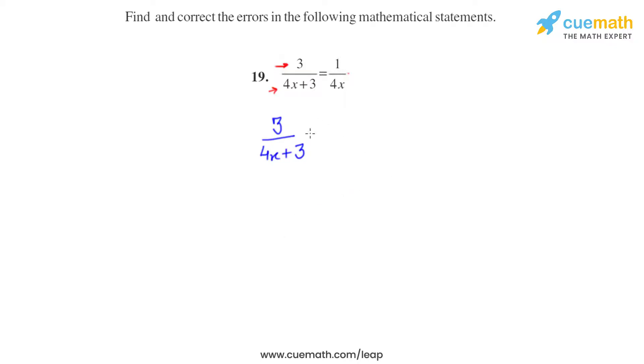So it means we cannot simplify it anymore. It stays as it is. 3 by 4x plus 3 is the final answer and it cannot be simplified anymore. Instead of 1 by 4x, the correct answer is 3 by 4x plus 3.